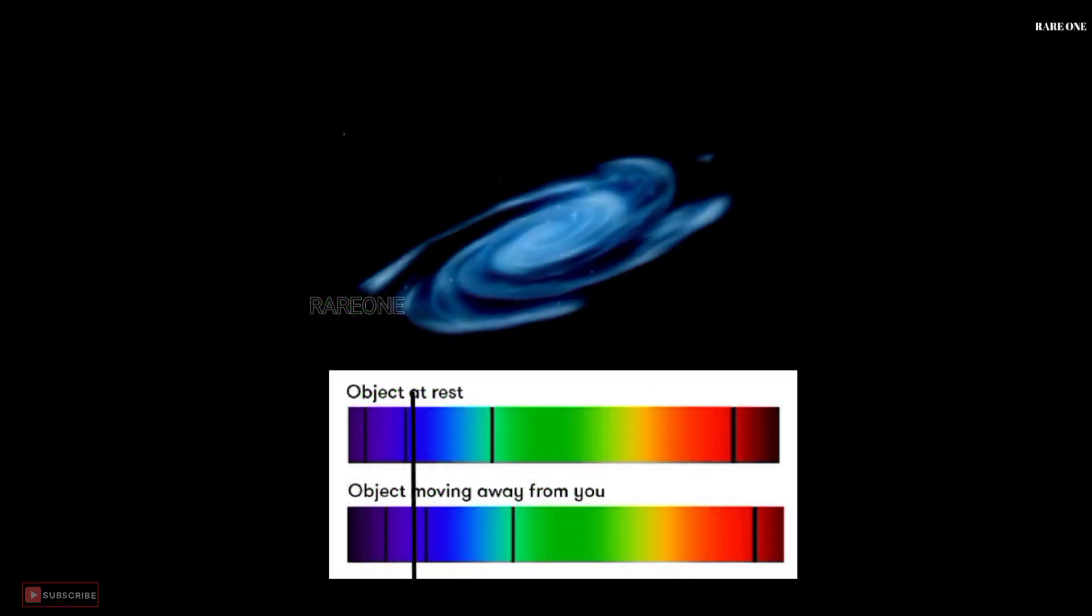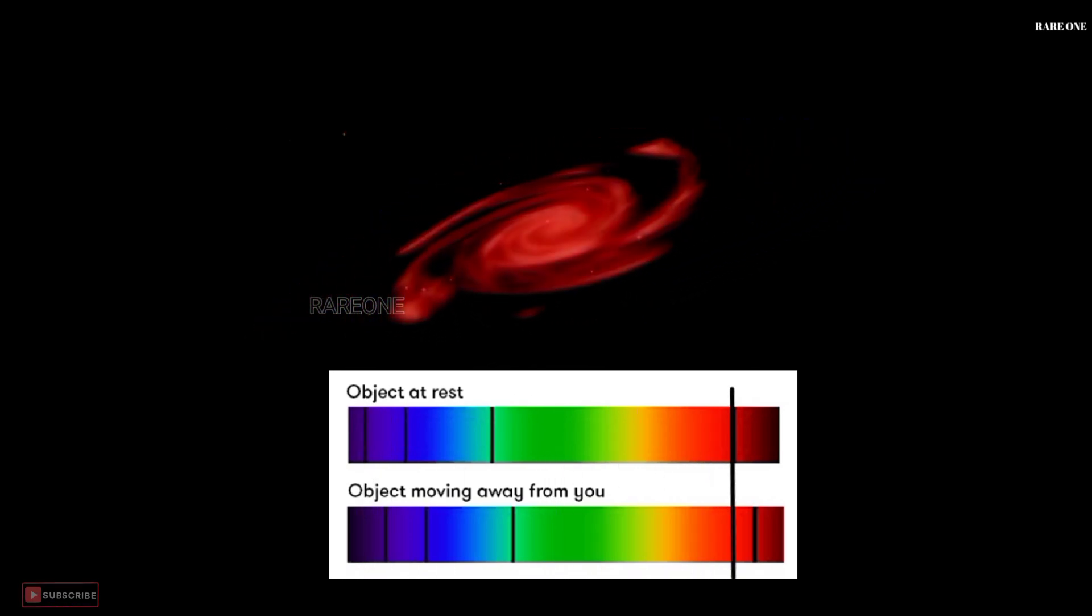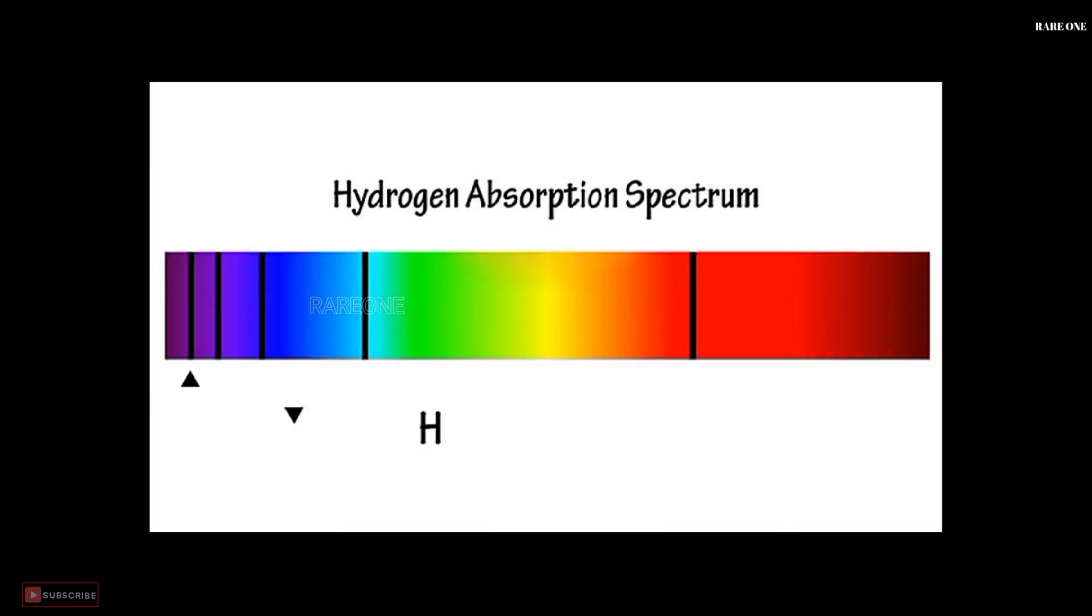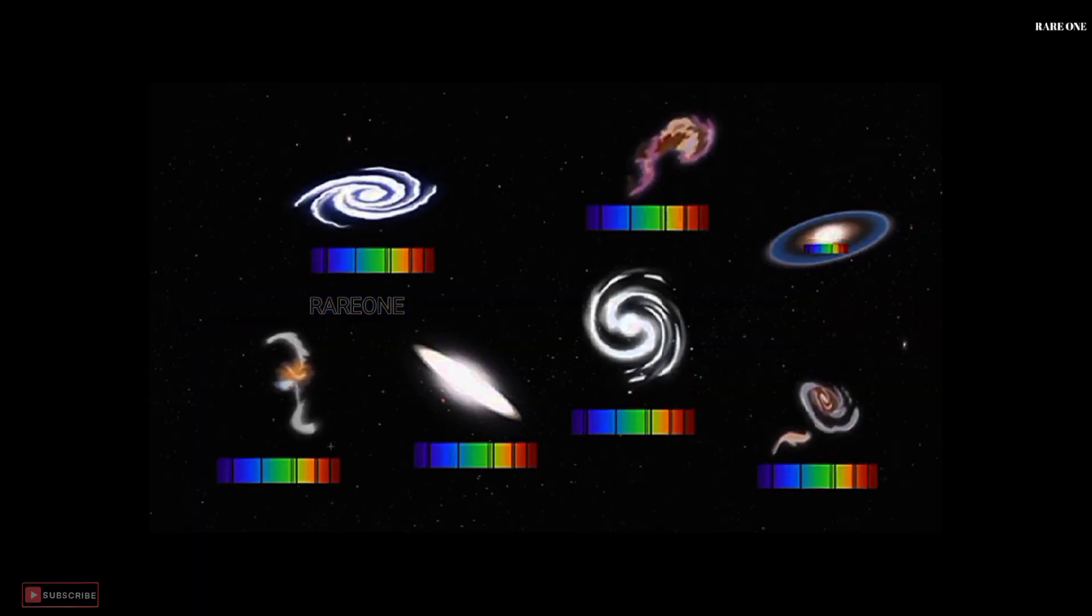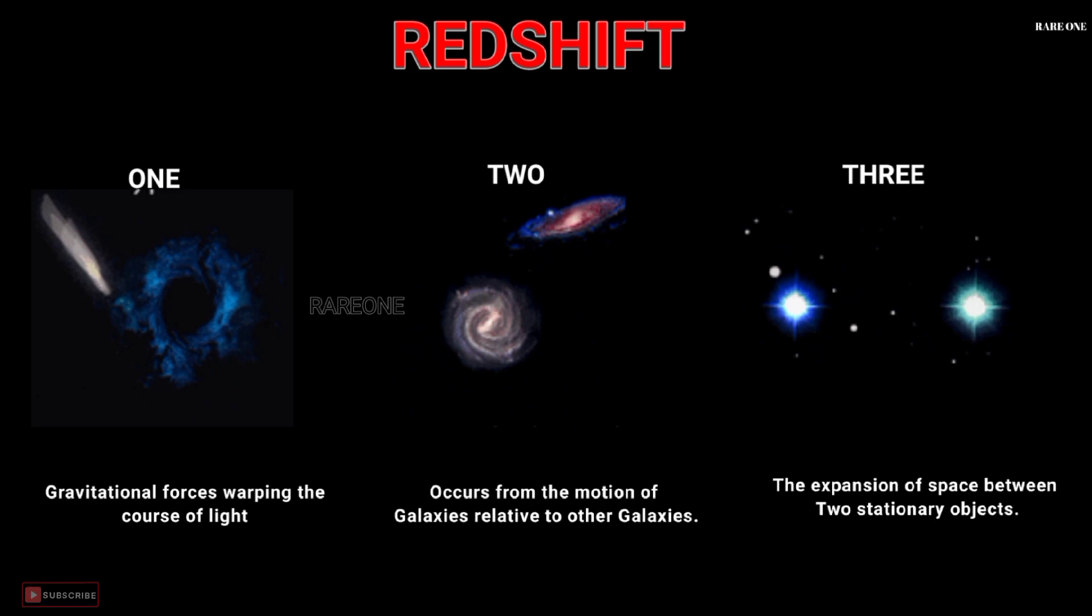When we observe light from distant cosmic objects like galaxies, we see that their spectral lines are shifted to redder wavelengths compared to what we'd expect. This redshift has three possible causes: gravitational redshift from light escaping massive objects, Doppler shift from the relative motion between the source and observer, and redshift from the expansion of space itself, stretching the wavelength of light.